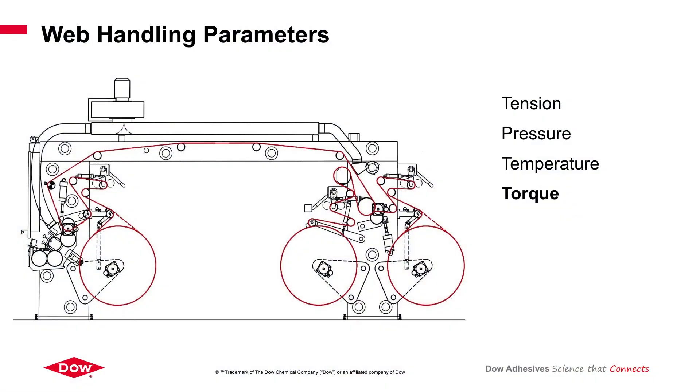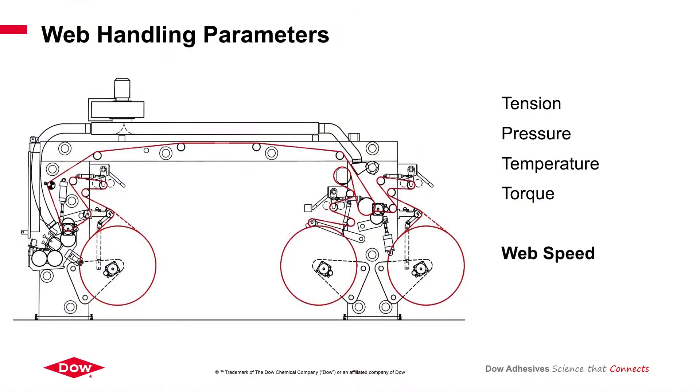Then we have the torque. The torque needs to be equal in all the rolls, so we can set the tapered tension in the right way in order to have the same tension and the same pressure from the beginning to the end of the roll. Then we have web speed and surface tension. Surface tension can be increased by corona treatment.